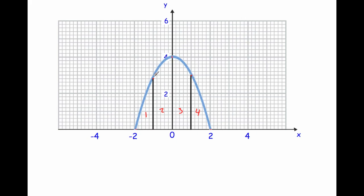It's quite difficult to find the areas of these regions exactly because of the curve, so we're going to consider them as triangles and trapezia: triangle one, trapezium two, trapezium three, and triangle four. Finding the areas of these four shapes gives us something very close to the actual area under the curve — we're only leaving out tiny bits, but this is as close as we can get at GCSE level.